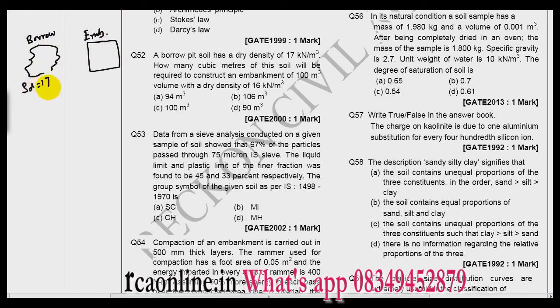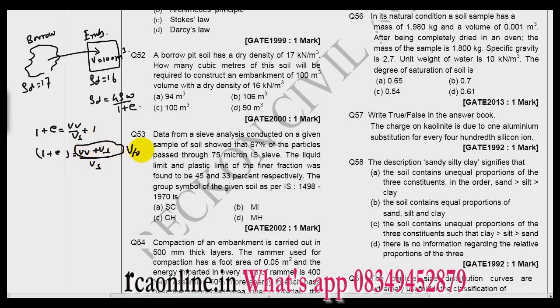So we have already done these type of questions. So this is my borrow pit and this is my embankment. The dry density at borrow pit is 17, and when it is transported here it becomes 16. So the dry density at embankment is 16 and the volume of the embankment is given as 100 meter cube. Now we know that dry density is G rho w over 1 plus e, and what is 1 plus e? So e is volume of void over volume of solid. Add 1 on both sides, so 1 plus e is volume of solid plus volume of void divided by volume of solid. Now this is the total volume V total, so what I can say: 1 plus e is V total divided by V solid.